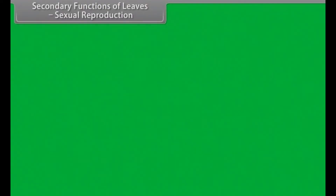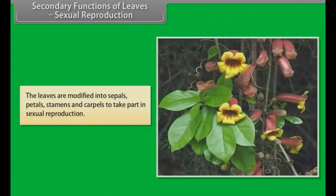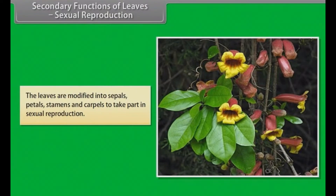Secondary functions of leaves also include sexual reproduction. The leaves are modified into sepals, petals, stamens and carpels to take part in sexual reproduction.